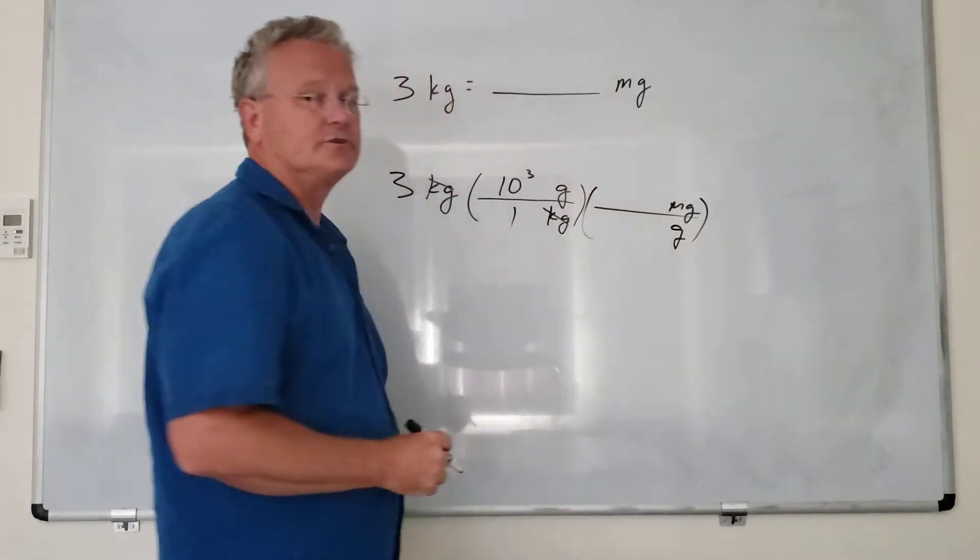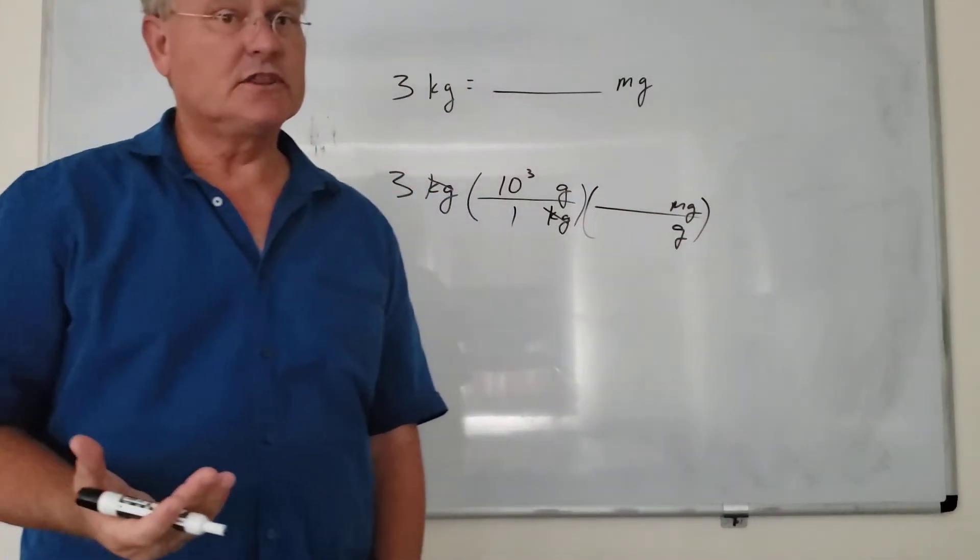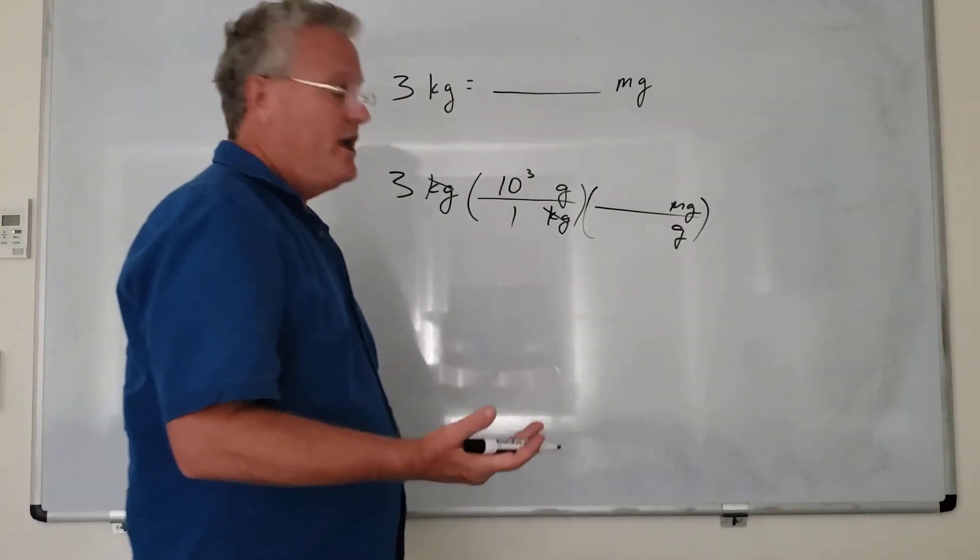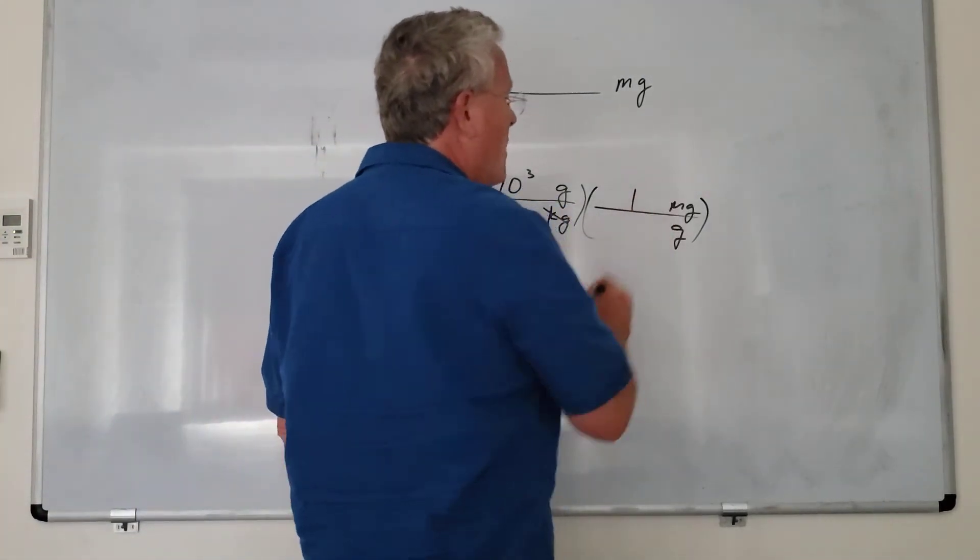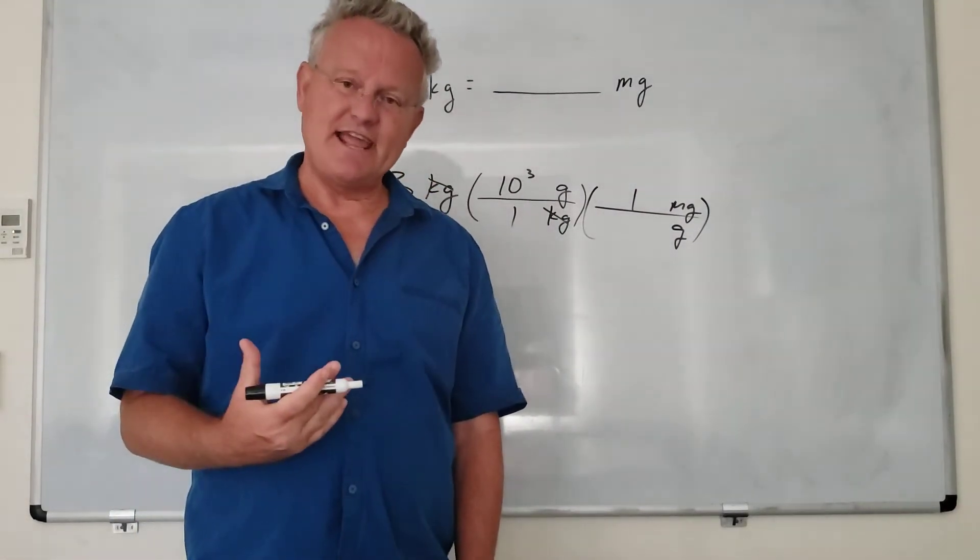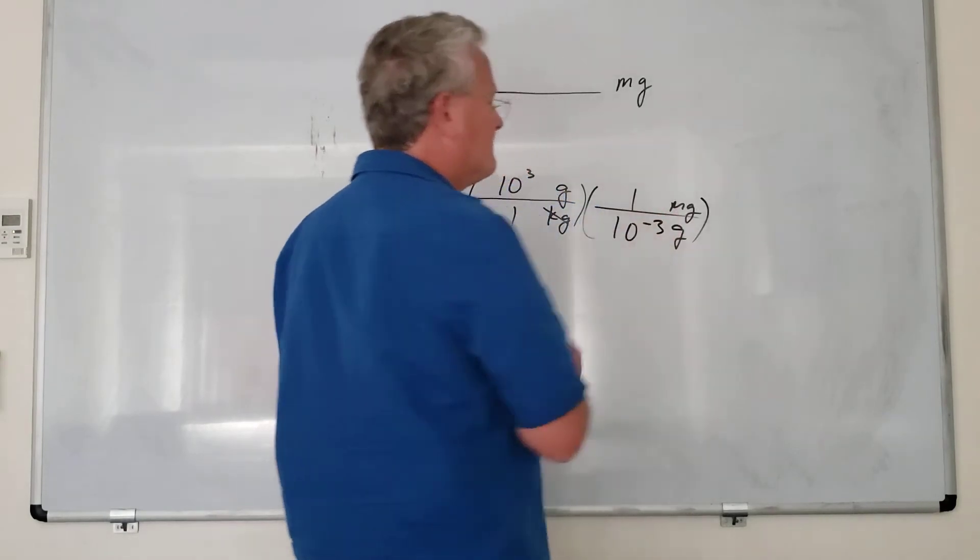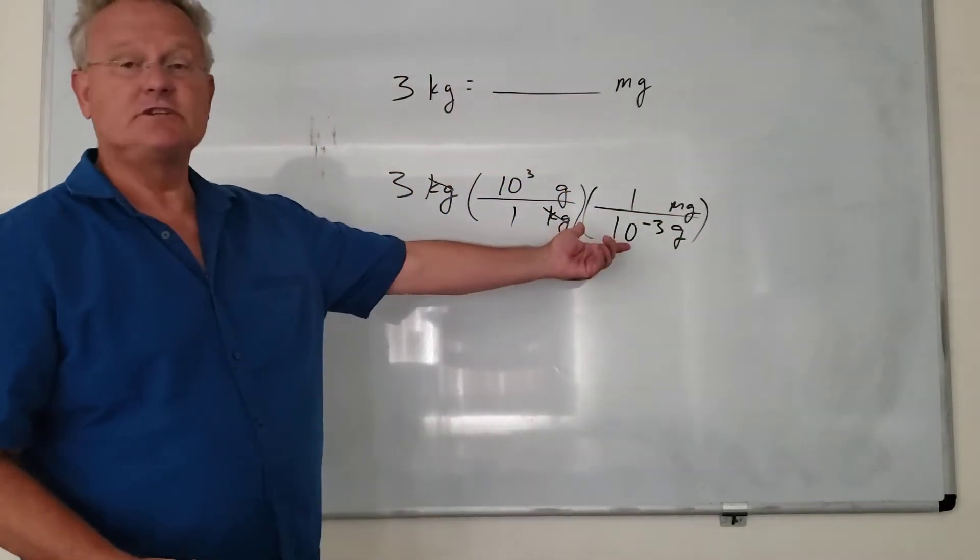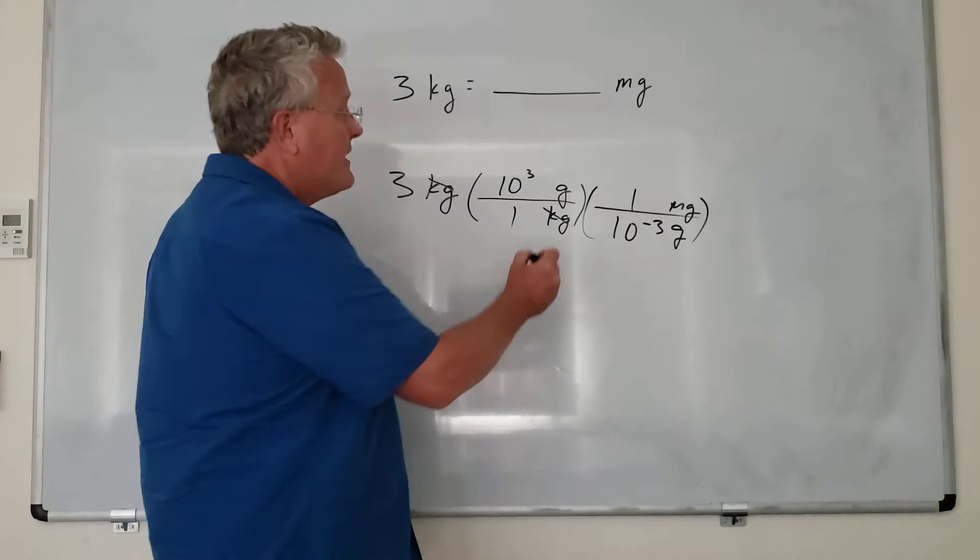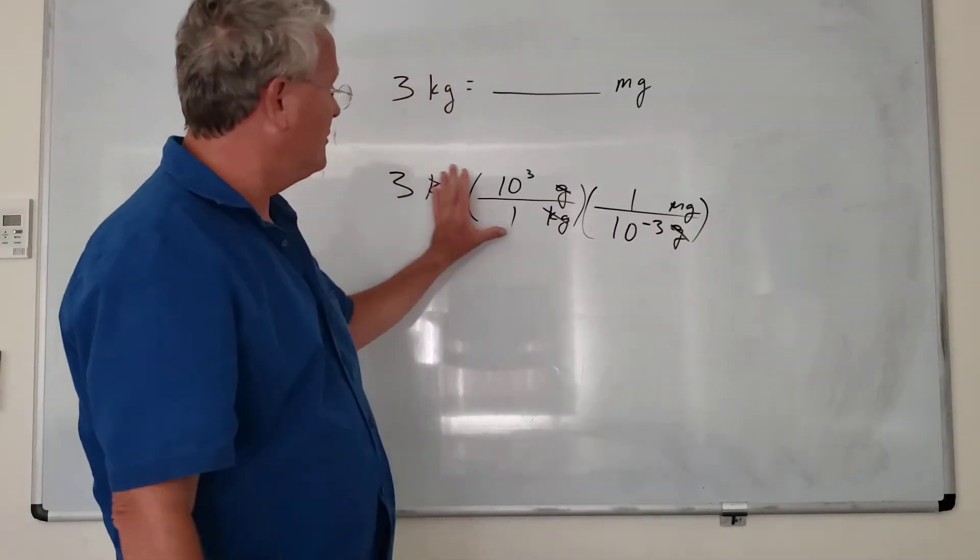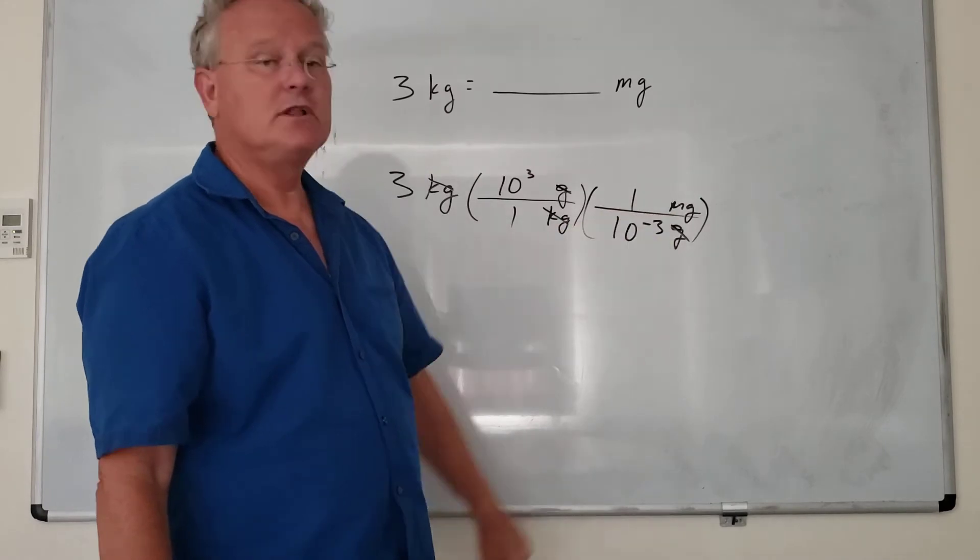This gram we want to put on the bottom again so they cancel. Now we look at the table and we can see that in the table, one milligram is 10 to the negative 3 grams. So just by looking at the table, that's how that works. These grams cancel and we know all the units are canceled and we're left with milligrams.